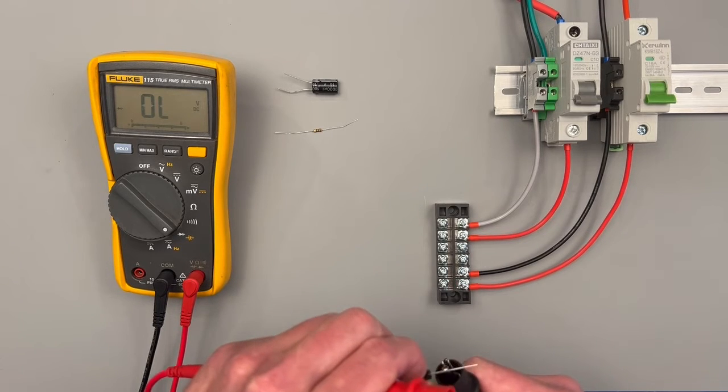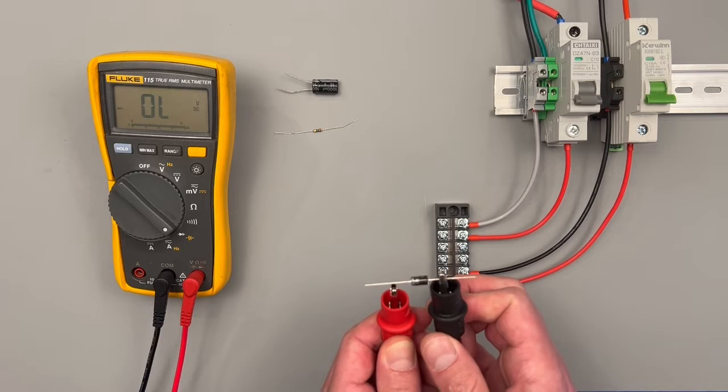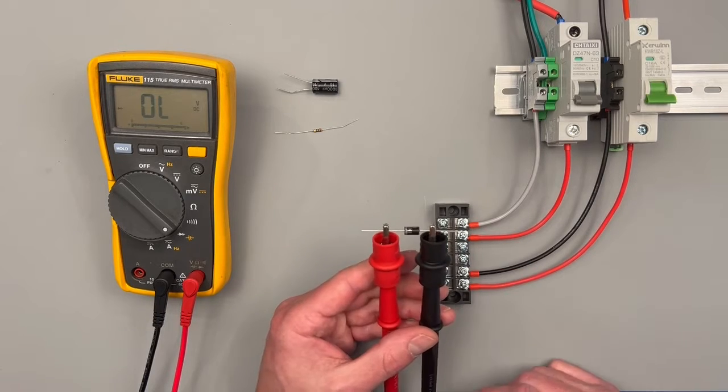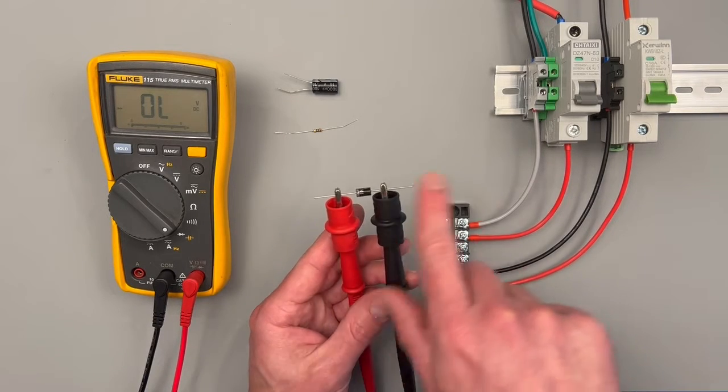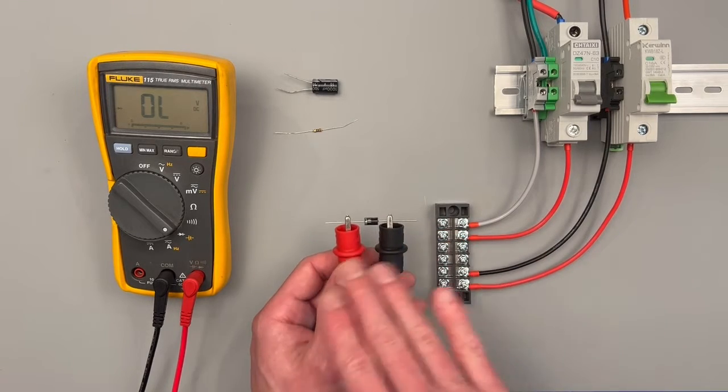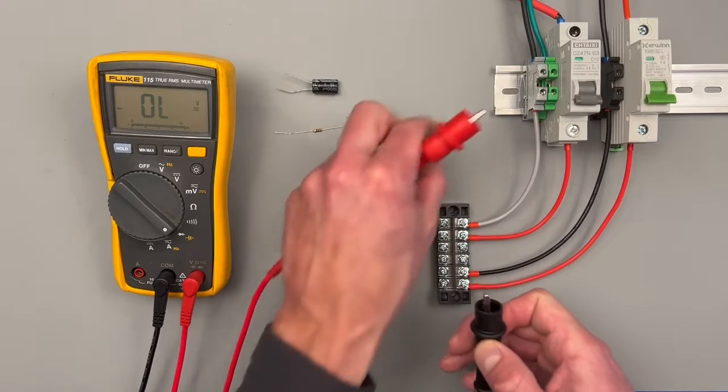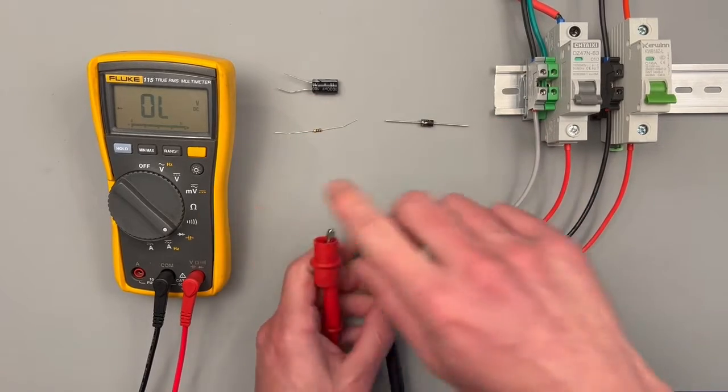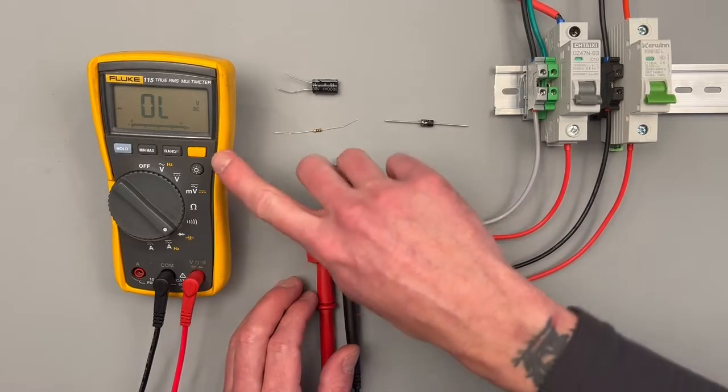We'll also want to test our diode in the reverse direction. Should say OL, meaning that there's no flow. There's no backflow in this specific type of diode. There's a lot more to diode testing than this, but you're running a mill diode until you perform that test.